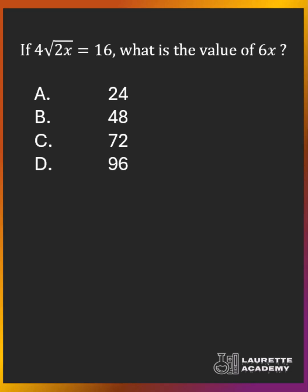So let's solve this SAT question: 4 times the square root of 2x equals 16, what is the value of 6x? We have that 4 times the square root of 2x is equal to 16. Now let's divide both sides by 4.